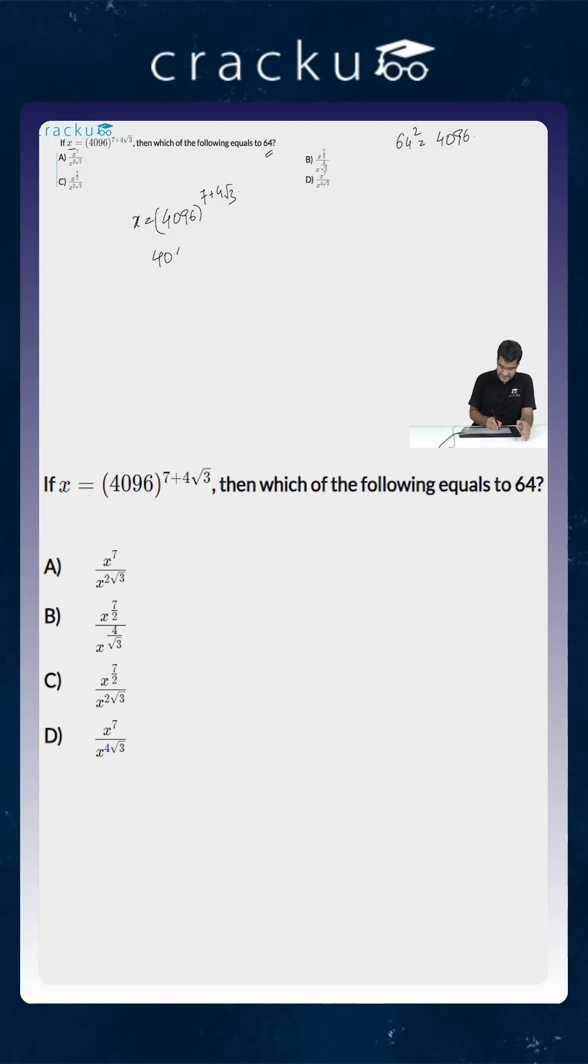So 4096 will become equal to x to the power 1 by 7 plus 4 square root of 3. But if you are looking at the term 1 divided by 7 plus 4 square root of 3, if you multiply the numerator and denominator with 7 minus 4 square root of 3...